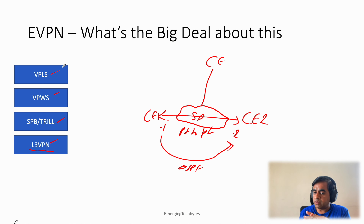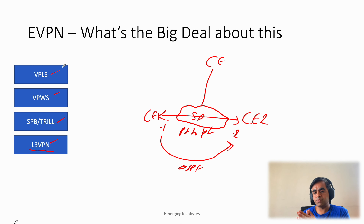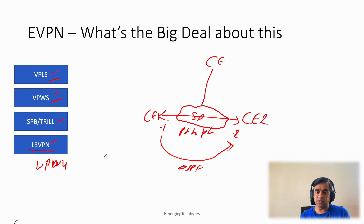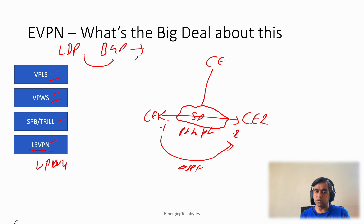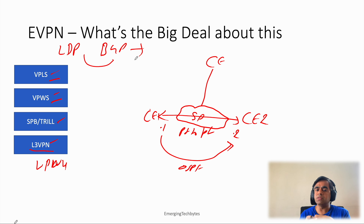One key thing regarding these services is that the control plane for them was provided by different and disjoint VPN technologies. With L3 VPN it was the VPNv4 address family; for VPWS and VPLS there were different mechanisms like LDP-based, BGP-based, or a combination of the two. The data plane was consistent, but the control plane was completely different across these services.